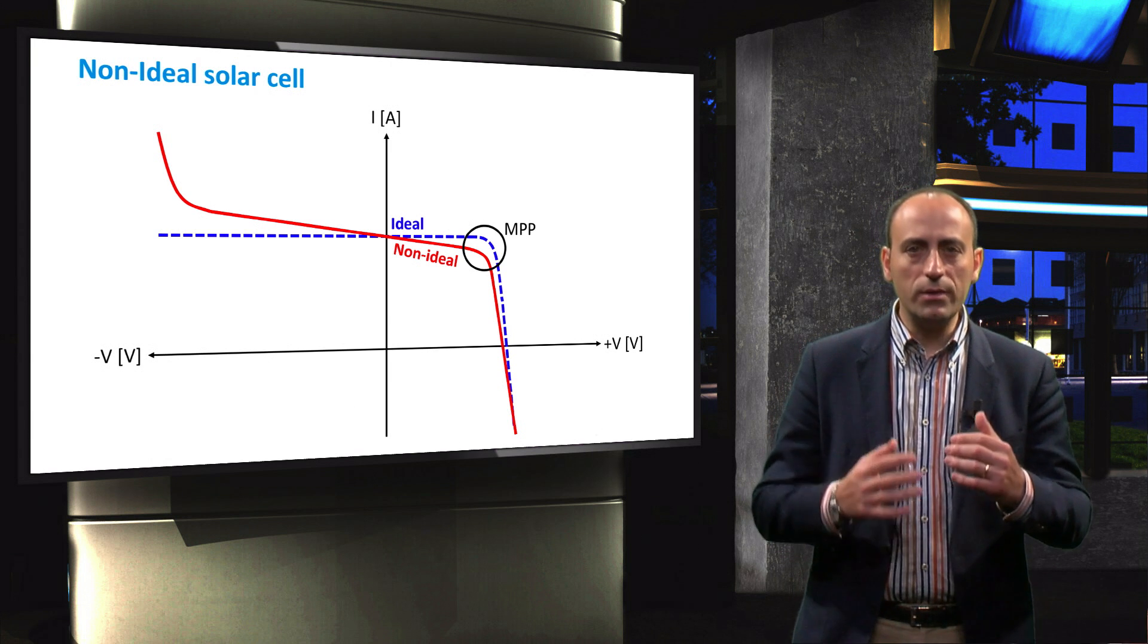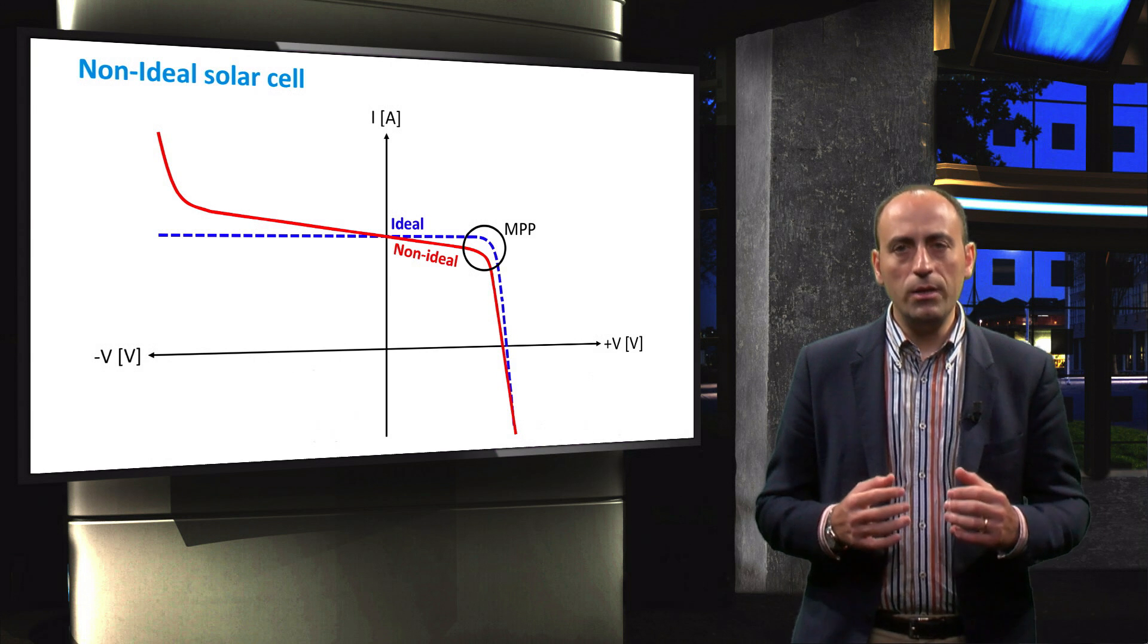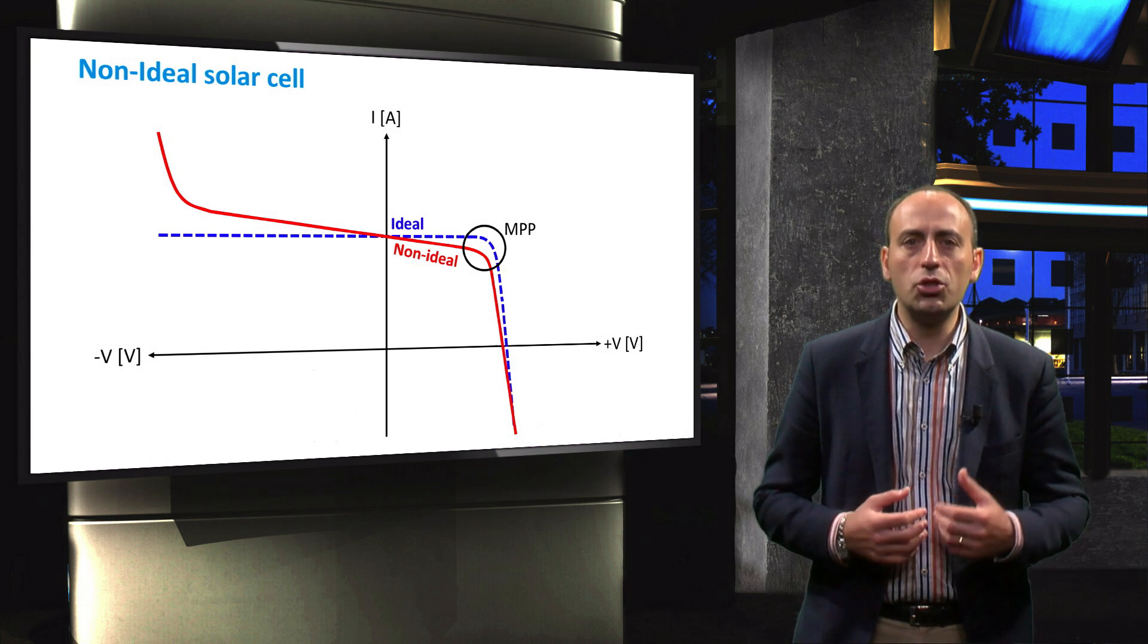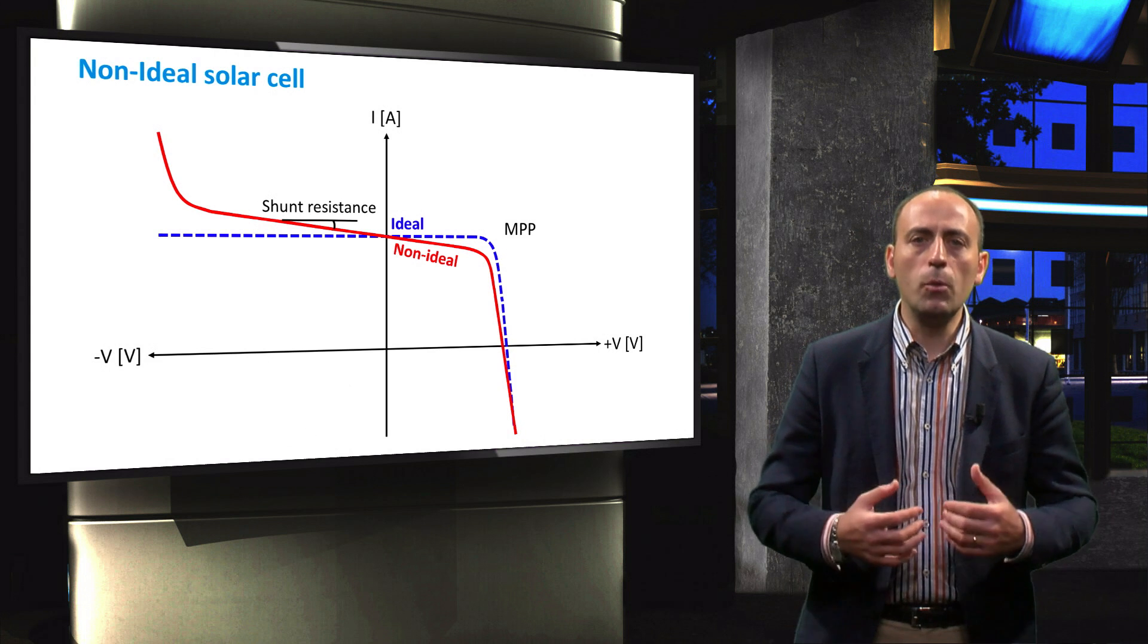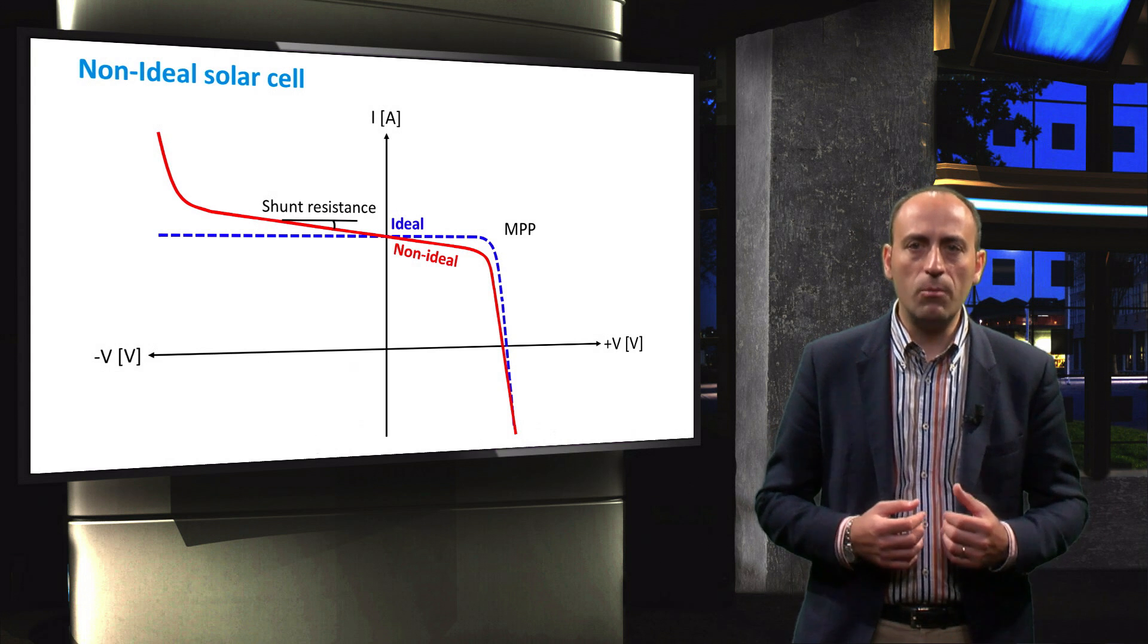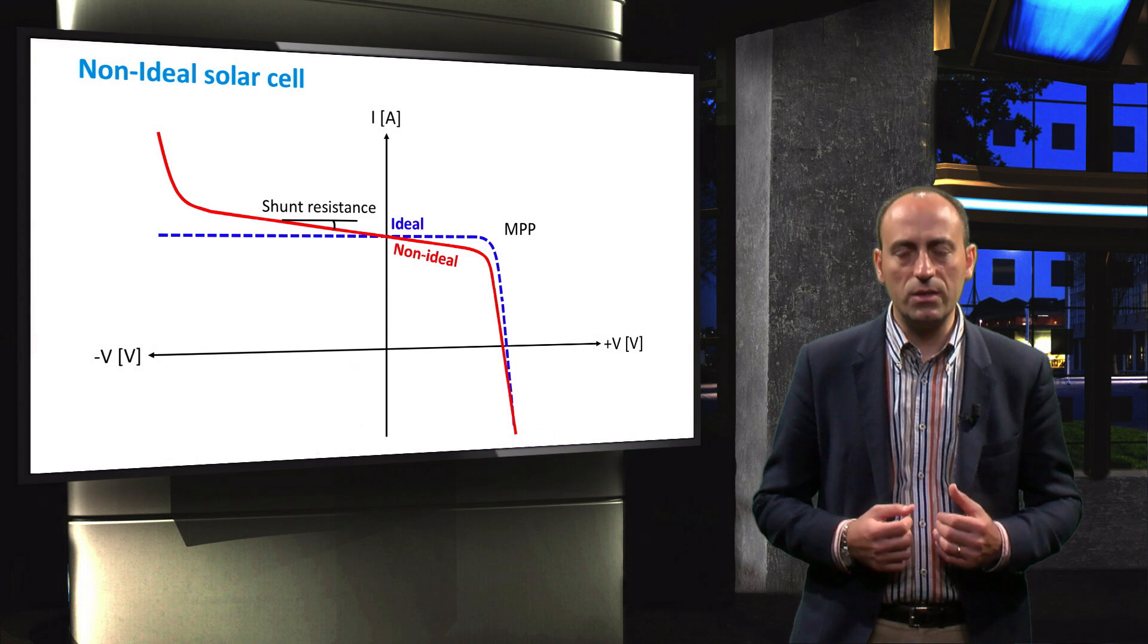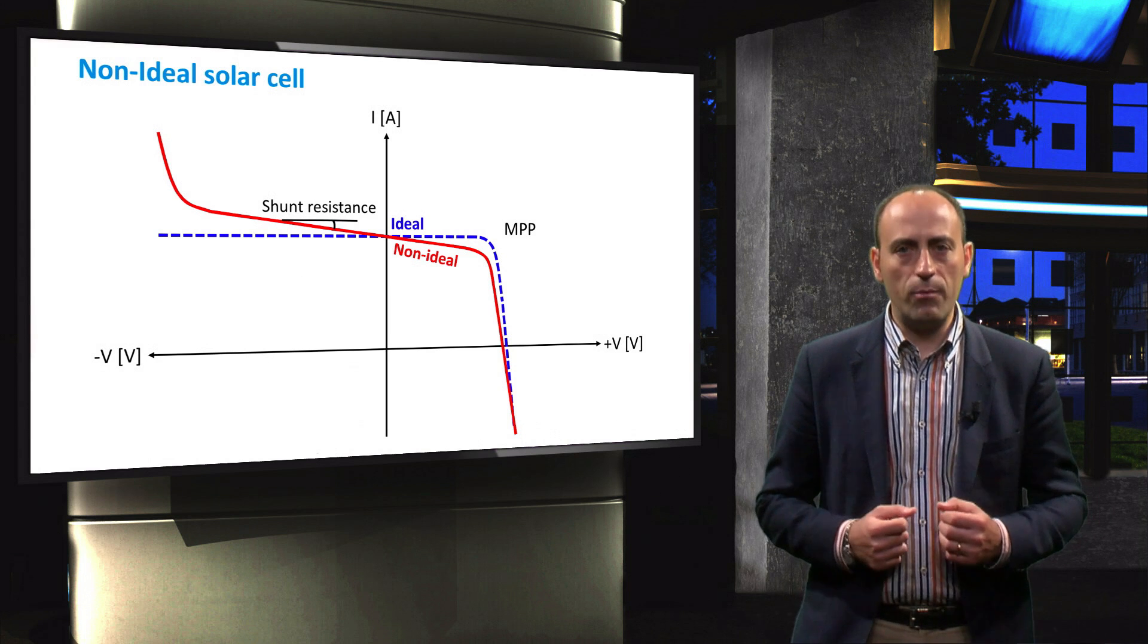Which is a bit lower than the theoretical one. This decrease in fill factor is caused by the shunt and series resistance of the module. Indeed, the slope on the left of the maximum power point is due to a decreased shunt resistance that occurs during the fabrication.